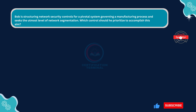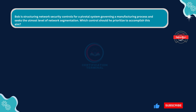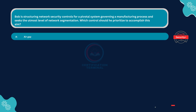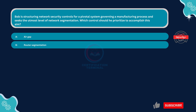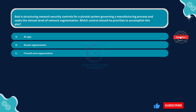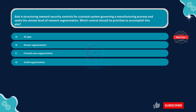Bob is structuring network security controls for a pivotal system governing a manufacturing process and seeks the utmost level of network segmentation. Which control should he prioritize to accomplish this aim? Option A: Air gap. Option B: Router segmentation. Option C: Firewall zone segmentation. Option D: VLAN segmentation.